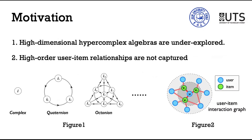However, we argue that existing hypercomplex approaches fall short in two aspects. First, high-dimensional hypercomplex algebras are under-exploited by current methods. Current methods are designed for specific and low-dimensional hypercomplex representation learning. However, there exist high-dimensional numbers in hypercomplex algebra families. As shown in Figure 1, high-dimensional hypercomplex numbers have more components. Intuitively, these high-dimensional ones are more expressive, while they are under-exploited by existing methods.